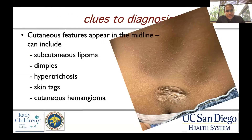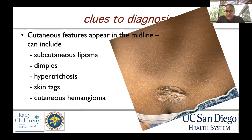Clues to diagnosis include cutaneous features that appear in the midline. In the setting of a lipomyelomeningocele, this can include a subcutaneous lipoma. A sacral dimple is typically a sign that there's some kind of abnormality underneath that needs to be investigated. Other signs include hypertrichosis or a hairy patch in the area, skin tags, or a cutaneous hemangioma.